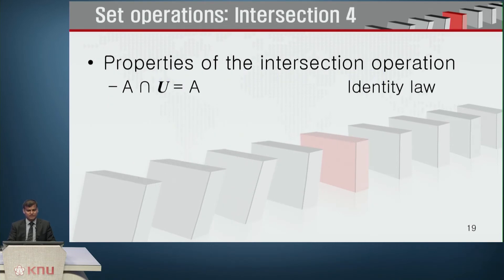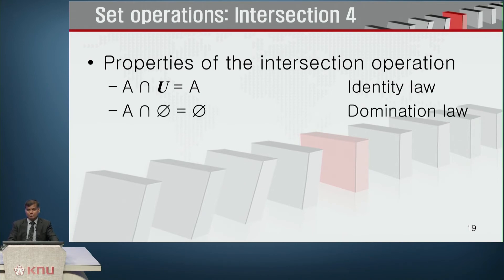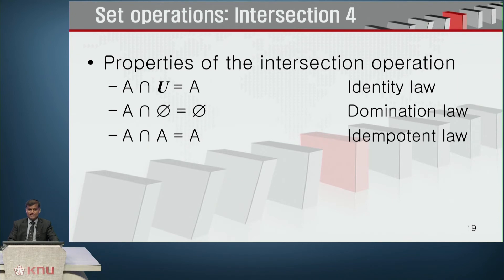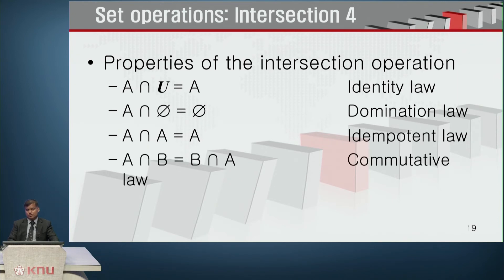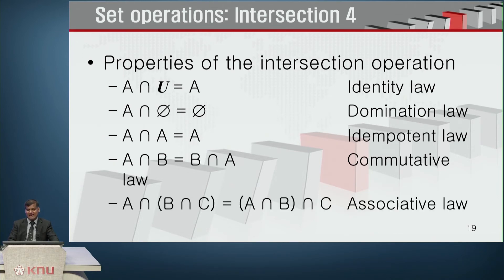Laws of intersection: A ∩ U = A (identity law), A ∩ ∅ = ∅ (domination law), A ∩ A = A (idempotent law), A ∩ B = B ∩ A (commutative law), and A ∩ (B ∩ C) = (A ∩ B) ∩ C (associative law).